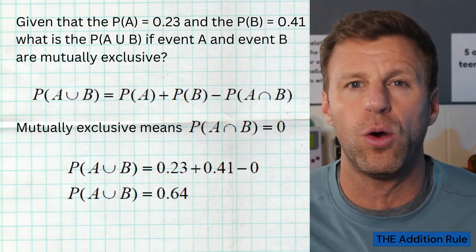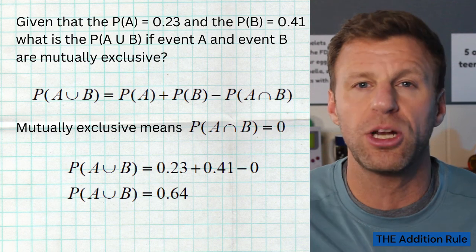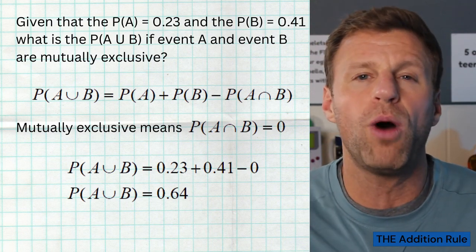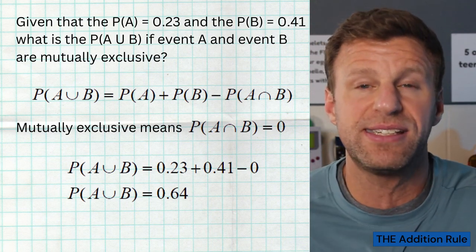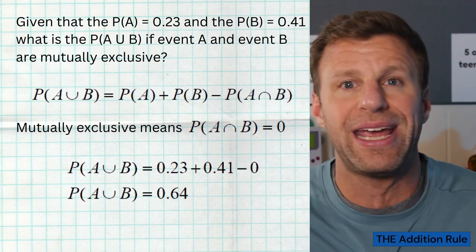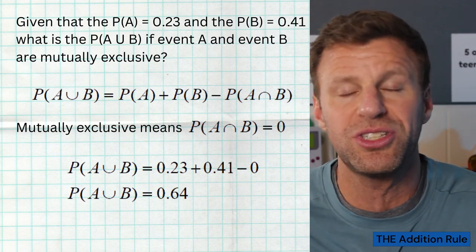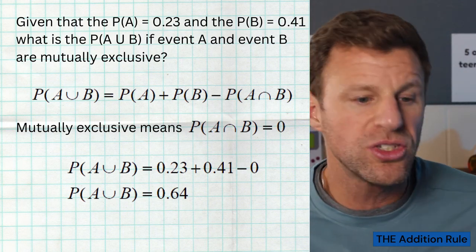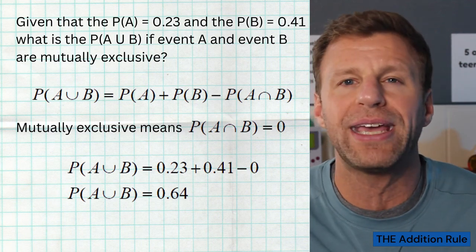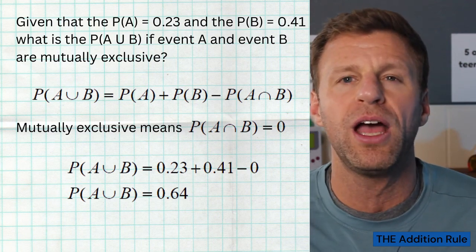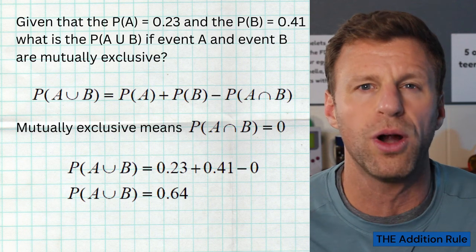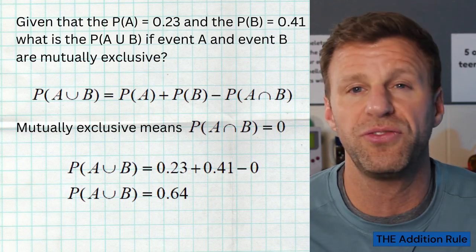So we substitute P(A and B) = 0 into our formula. It's going to be 0.23 plus 0.41 minus zero, because A and B are mutually exclusive. At the end of that math, we get a probability of A or B being 0.64, or 64%.